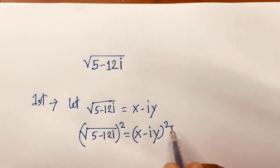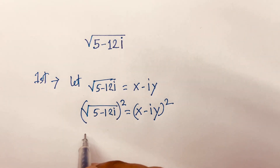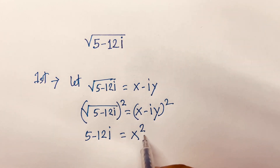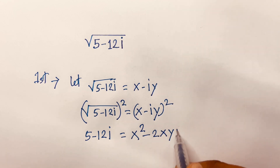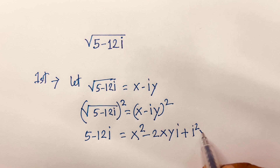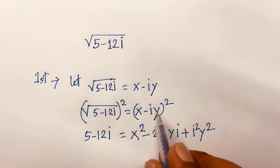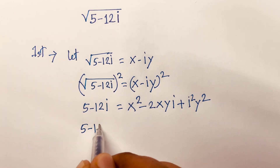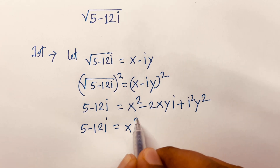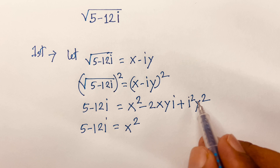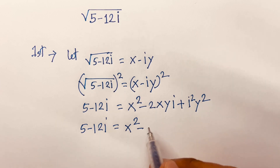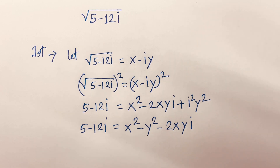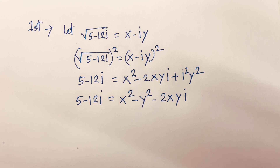After squaring, the square root is cancelled, so we get 5 minus 12i equals x squared minus 2xyi plus i squared y squared. We know that (a minus b) whole square equals a squared minus 2ab plus b squared. Since i squared equals minus 1, this becomes x squared minus y squared minus 2xyi.